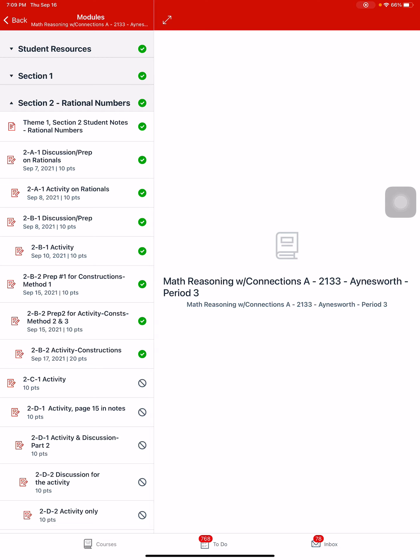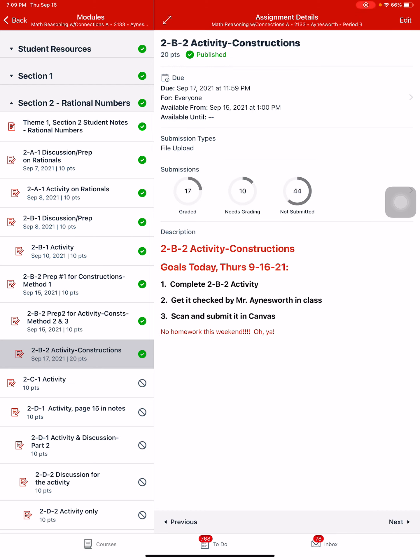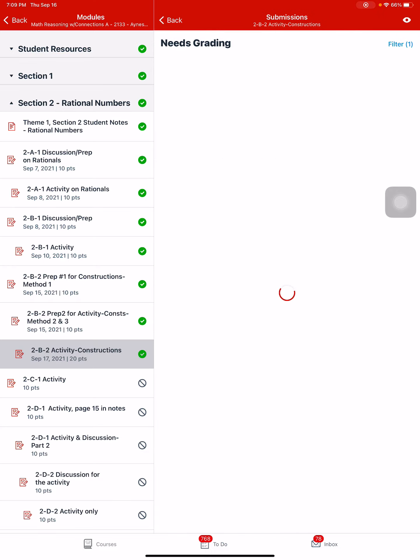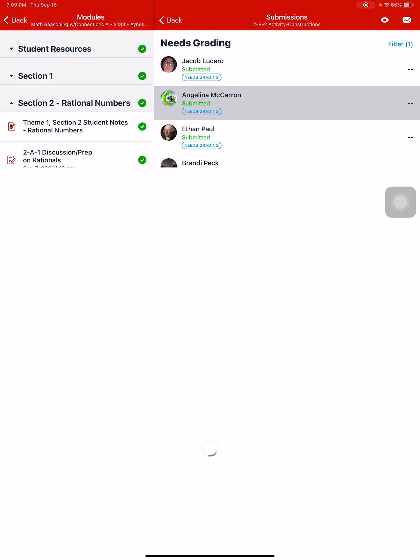Like I'm going to demonstrate how to grade constructions in this class called MRWC. And it tells you here how many people have submitted versus not submitted. I've already graded 17, I need to grade a few more. So let's pick one to grade and show you how it's done.